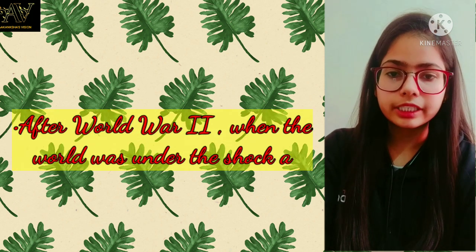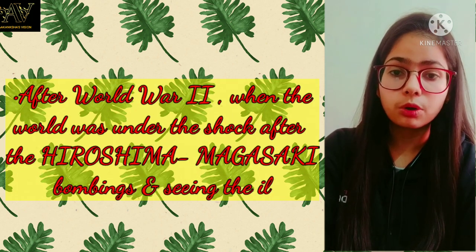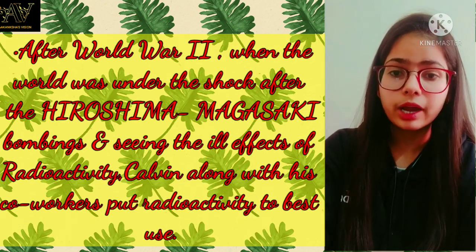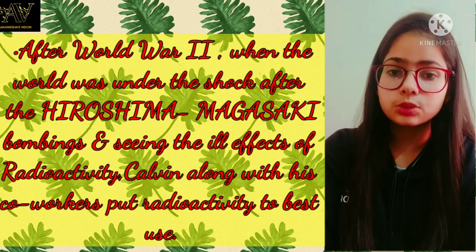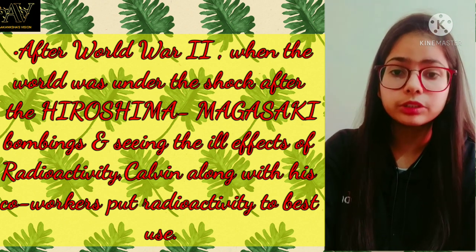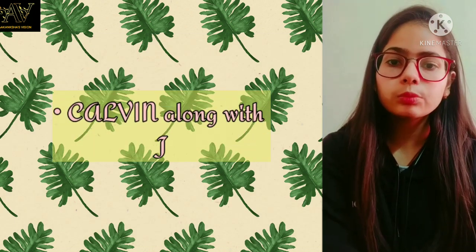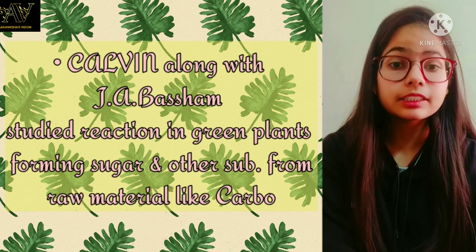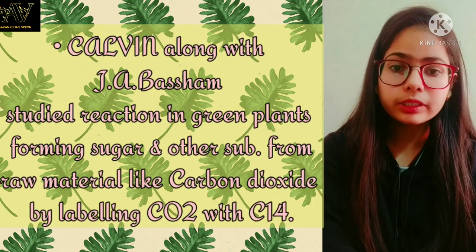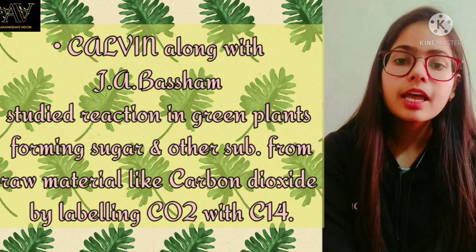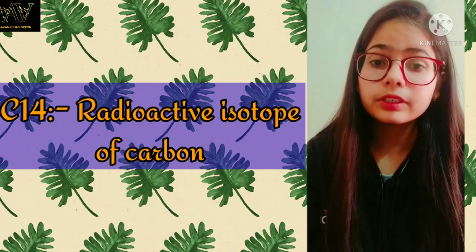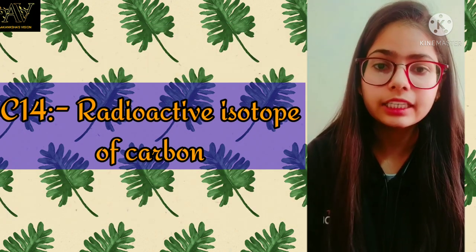Just after World War II, when the world was under shock after the Hiroshima and Nagasaki bombings and seeing the ill effects of radioactivity, Calvin along with his co-workers put radioactivity to its beneficial use. Calvin along with J.A. Bassham studied reactions in green plants forming sugar and other substances from raw materials like CO2, labeling CO2 — that is carbon dioxide — with the C-14 isotope of carbon. Remember that the C-14 isotope of carbon is basically the radioactive isotope of carbon.